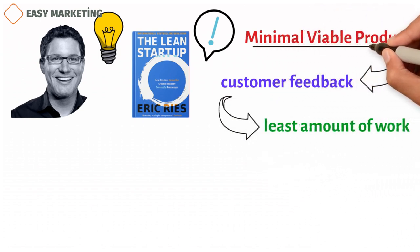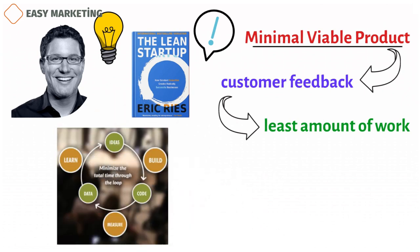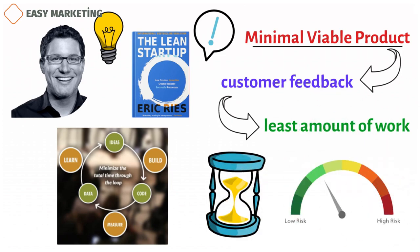With a minimum viable product, product managers can quickly begin to learn. The validated learning loop, build-measure-learn, can be finished in the least amount of time and with the least amount of risk.